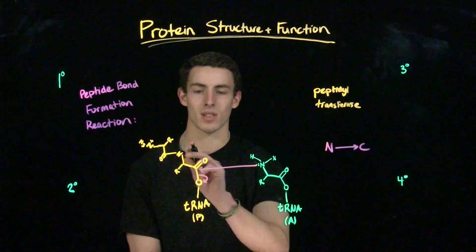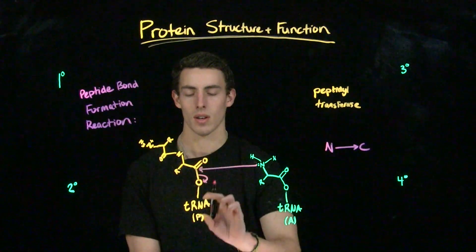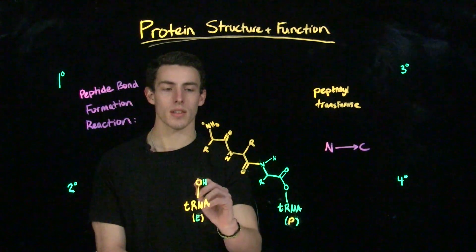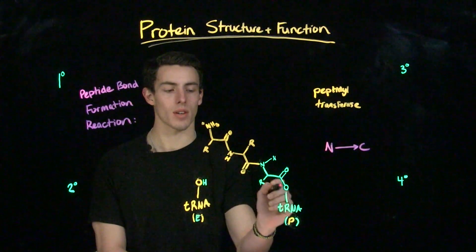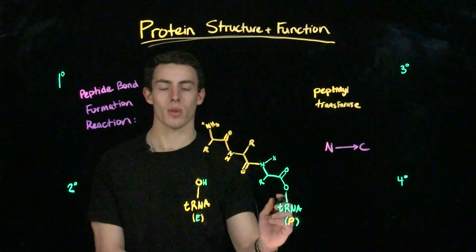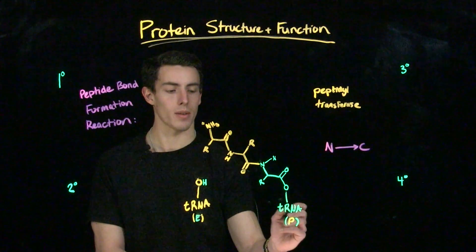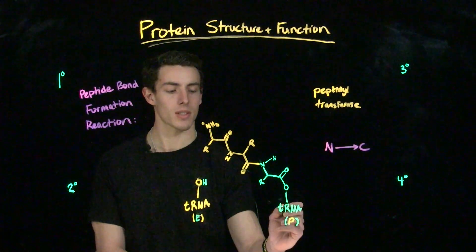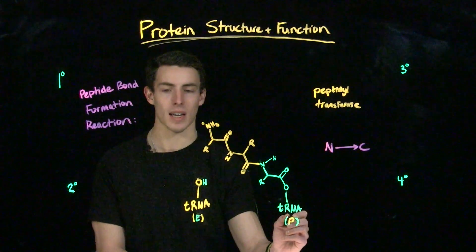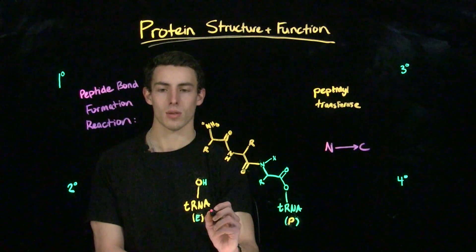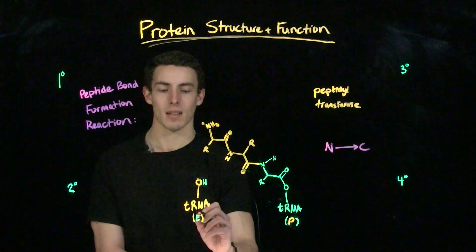Thus, the peptide chain is transferred from the tRNA in the P-site to the tRNA in the A-site. So, after the oxygen leaves and the polypeptide chain is transferred onto the other tRNA, we see that this also corresponds to the translocation of tRNA through the large subunit of the ribosome, where this tRNA that was in the aminoacyl site translocates into the P-site. And this tRNA that was in the peptidyl, or P-site, translocates into the E, or exit site, because it is now empty.